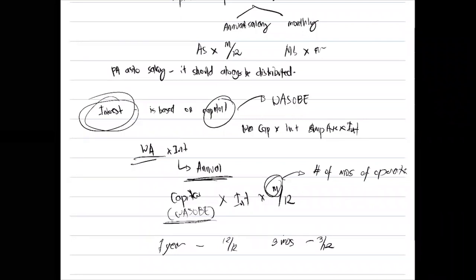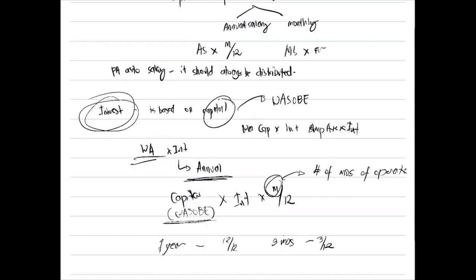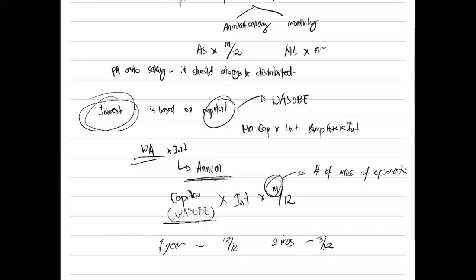If the problem states that interest is based on weighted average capital, compute the weighted average capital first, then multiply by the interest rate. If based on beginning capital, get the beginning capital and multiply by the percentage. If based on original capital, get the original capital and multiply by your percentage. Salary, interest, and bonus are inclusions in your partnership agreement; you satisfy these first before distributing the remainder.